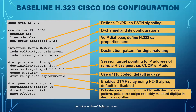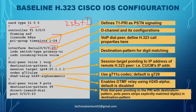For T1 PRI configuration, you use the 'card type t1' command and enter the controller. You then use 'pri-group timeslots 1 to 24' - since we're using a T1 card with PRI, the maximum is 24. This command defines T1 PRI as a PSTN signaling interface. Then 'interface serial 0/0/0:23' is used for signaling - that is the D-channel, since T1 has 23B plus D.